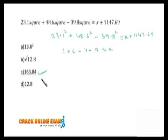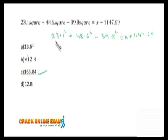Alternatively, what you can do is calculate the digital root as well. For any expression, the digital root of the left-hand side should be equal to the digital root of the right-hand side. You can leave the decimals. Here, 2 plus 3 is 5, and 1 is 6. 6 into 6 is 36, so the digital root of this will be 9.